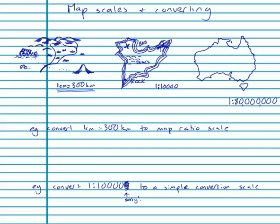Or they can be given as a ratio scale like these two. The ratio of one to 10,000 means that one of any unit on the map is the same as 10,000 of those units in real life. If I measured in centimeters on the map, one centimeter on the map, 10,000 centimeters in real life. If I measured in inches on the map, two inches on the map, 20,000 inches in real life.